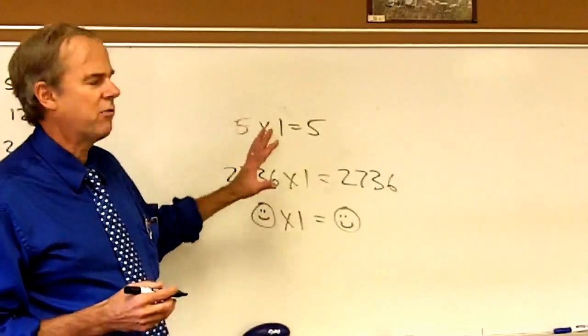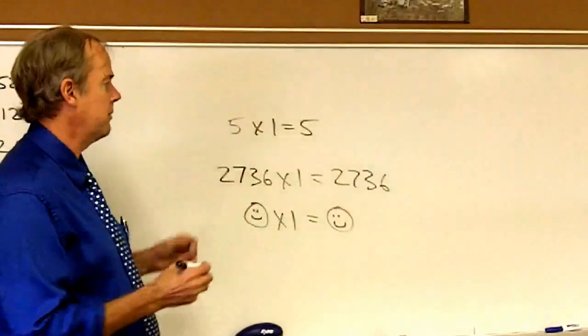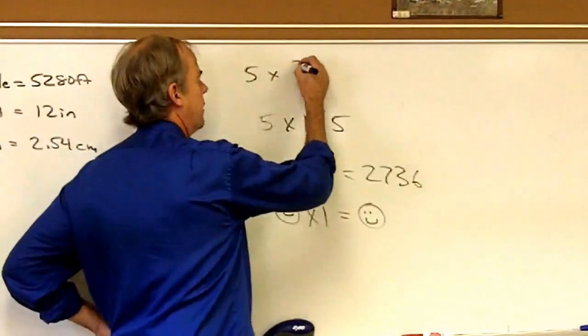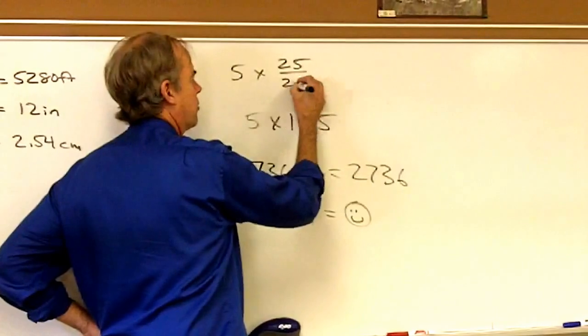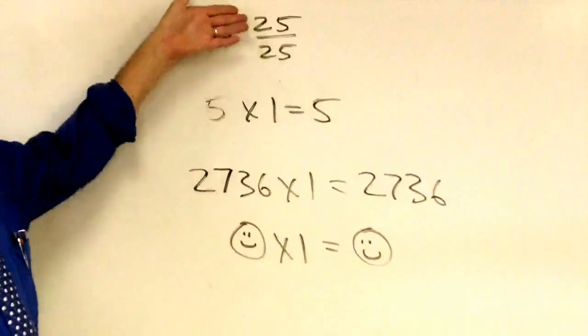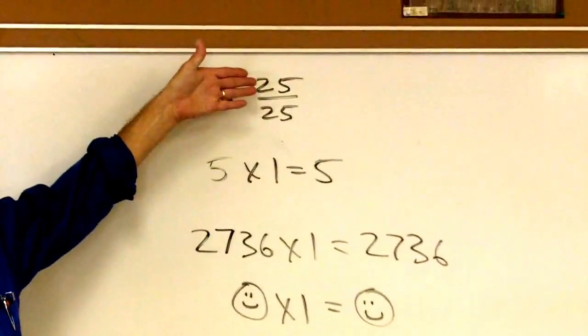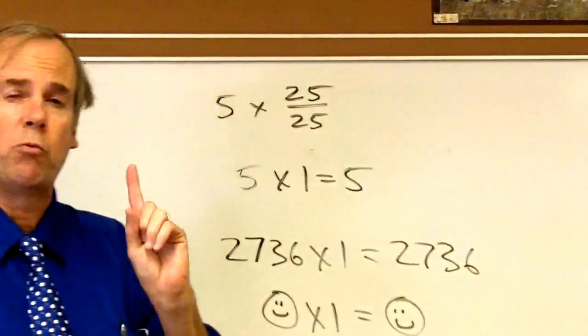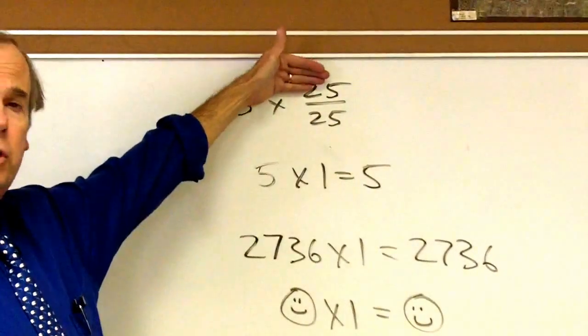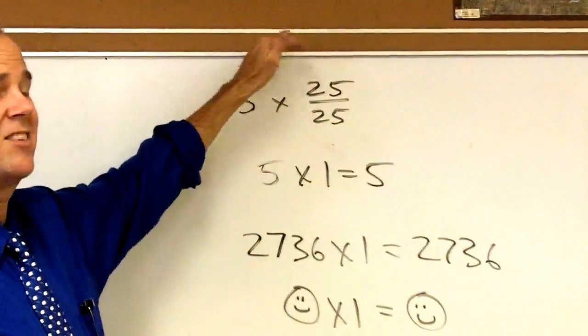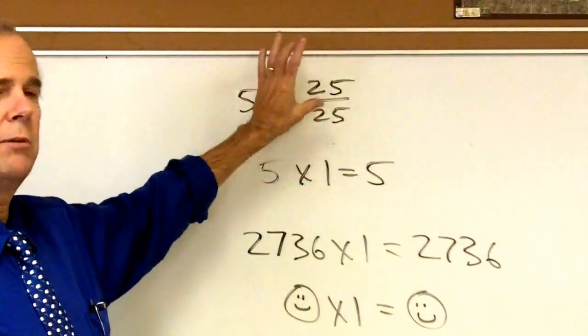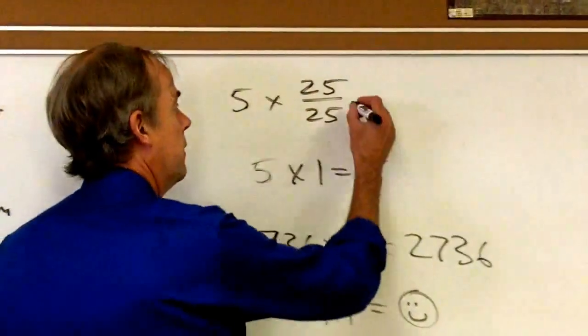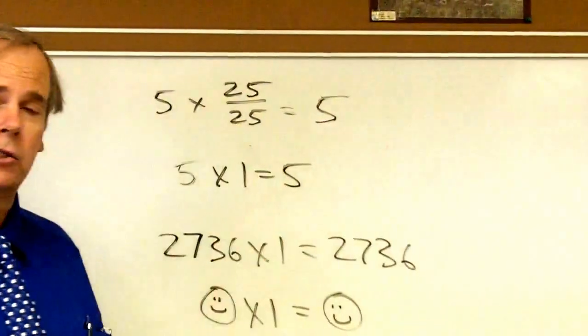Of course, the way in which we represent 1 can be different as well. For instance, I could take a number and multiply it by, say, 25 over 25. Mathematics tells me that any time you take a number and divide it by itself, the outcome is 1. So any time I write a ratio wherein the numerator is equal to its denominator, it really means the same thing as 1. Therefore, if I multiply a value by 1, I get an unchanged value.